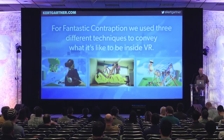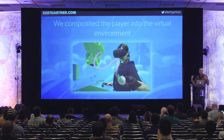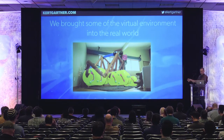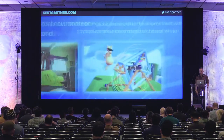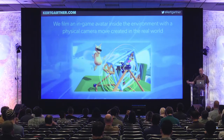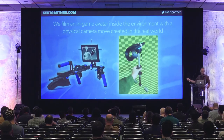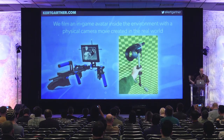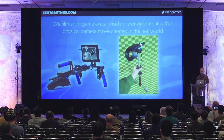For Fantastic Contraption, there were basically three things we did. First, we composited the player into the virtual environment — all the green screen stuff. Second, the inverse: taking virtual objects and bringing them into the real world. Third, we filmed an in-game avatar shot using a real camera in the real world — this is something that's been done for pre-visualization on big Hollywood movies like Avatar, but now we can do it with a Vive controller, some Funtac, rubber bands, and a $5 ghetto steadycam.